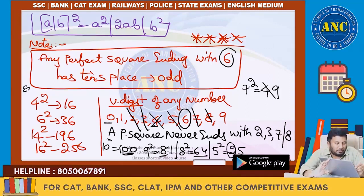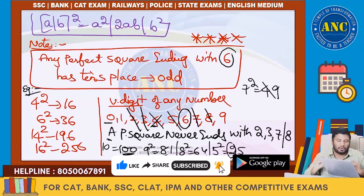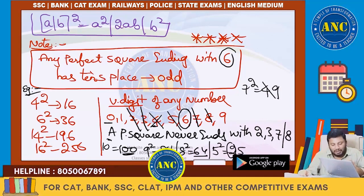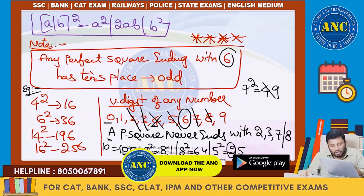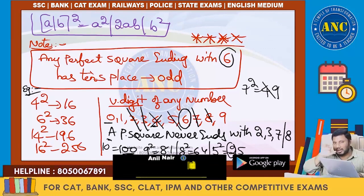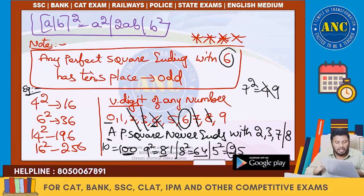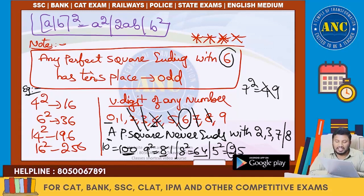This is an important concept. Why can it only be 6? Why can't it be any other number? The unit digit of any number is from 0 to 9. A perfect square never ends with 2, 3, 7, or 8 — those are ruled out. The remaining possible unit digits are 0, 1, 4, 5, 6, and 9.